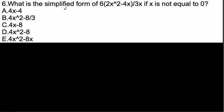Okay, so in this problem it says, what is the simplified form of 6 times 2x squared minus 4x over 3x, if x is not equal to 0?